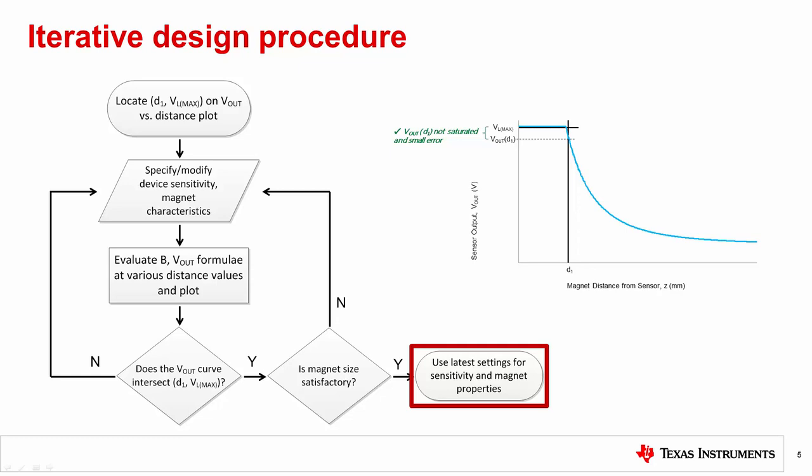If Vout at D1 is no longer saturated, the error between Vout at D1 and VL max is sufficiently small, and the magnet size is satisfactory, then the selection process is complete. Otherwise, readjust device sensitivity or magnet dimensions and reiterate.